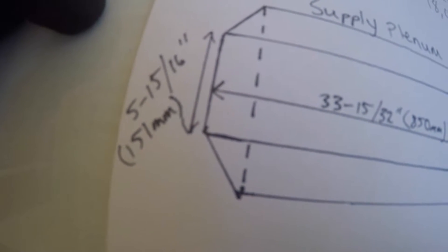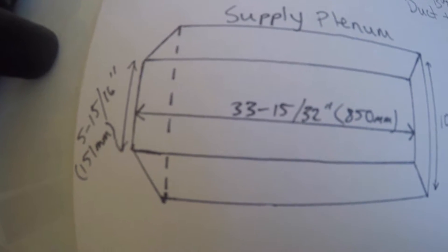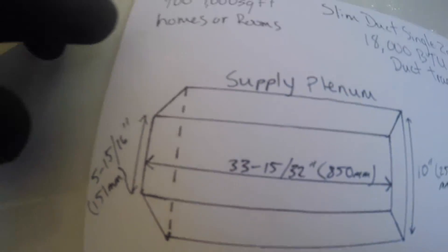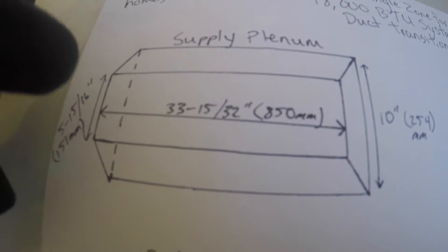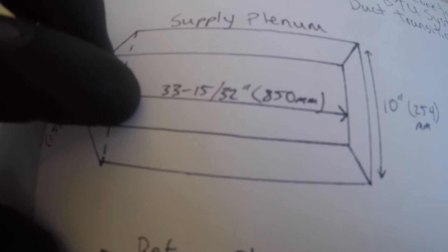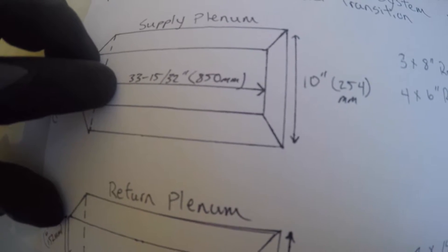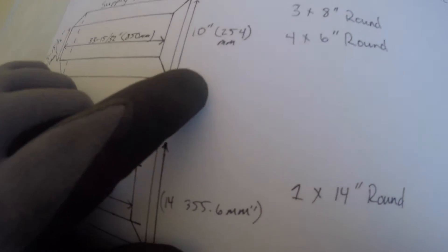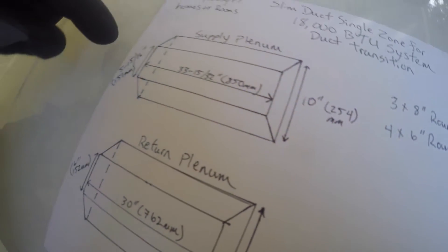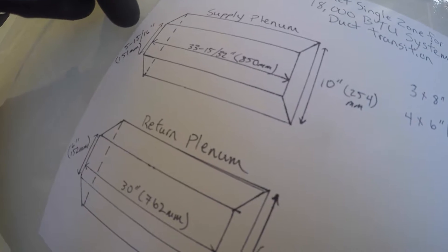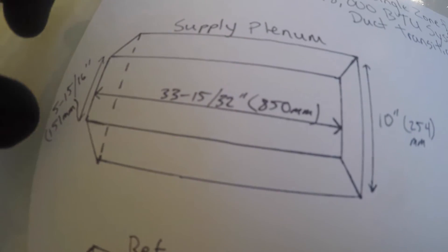we're at 5 15/16 inches, which is 151 millimeters high on this supply connection, and we're looking at 33 15/32 inches, which equals 855 millimeters. What would work for this system is a 10-inch transition. Basically, when we go from 5 5/16 inches to 10 inches, this will create that transition